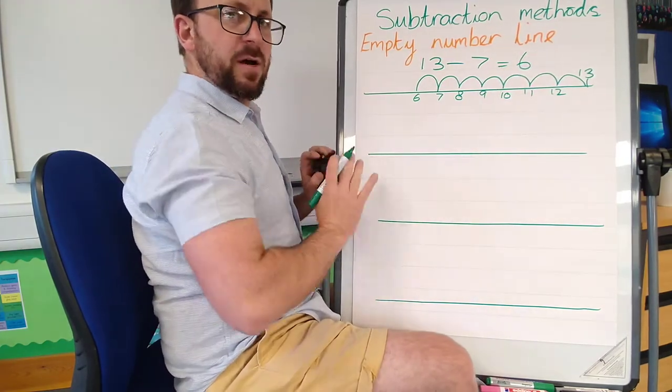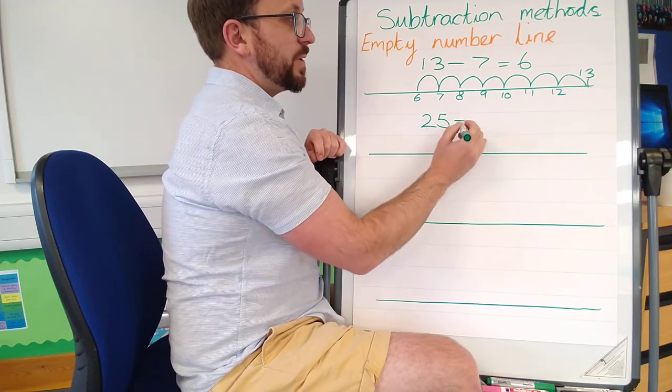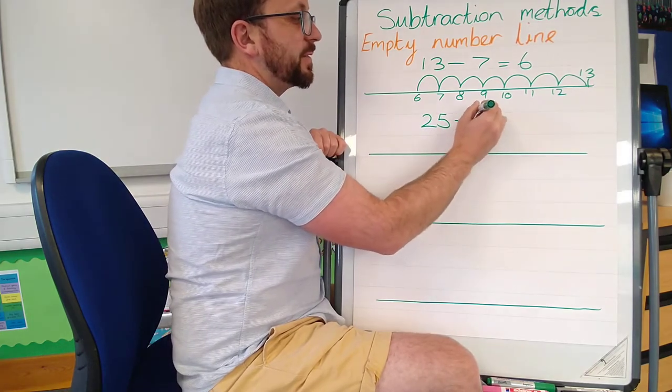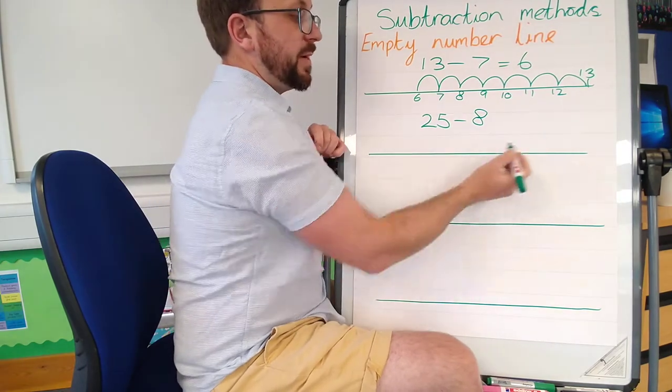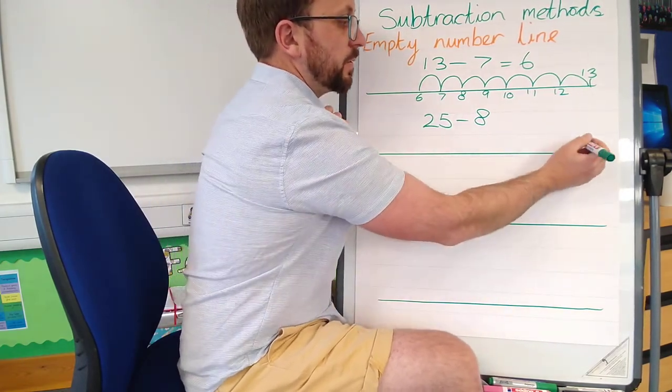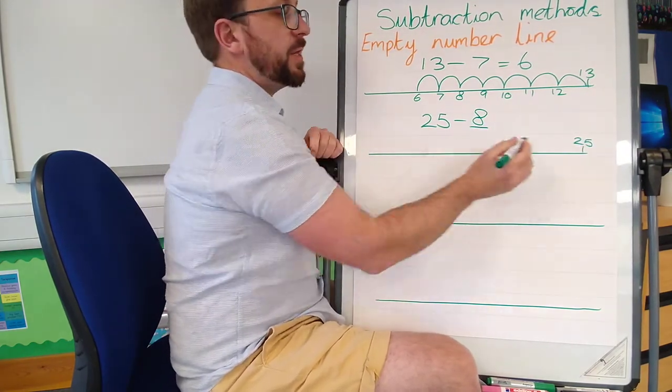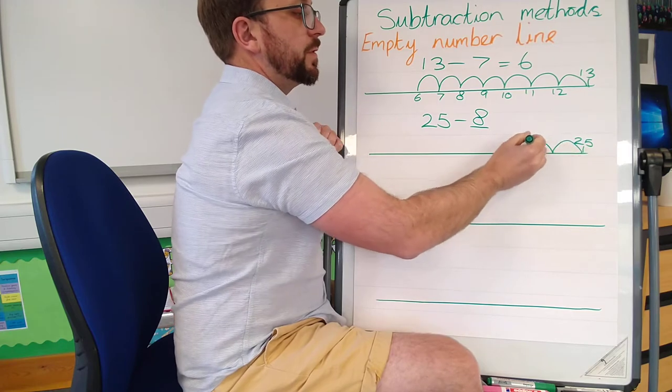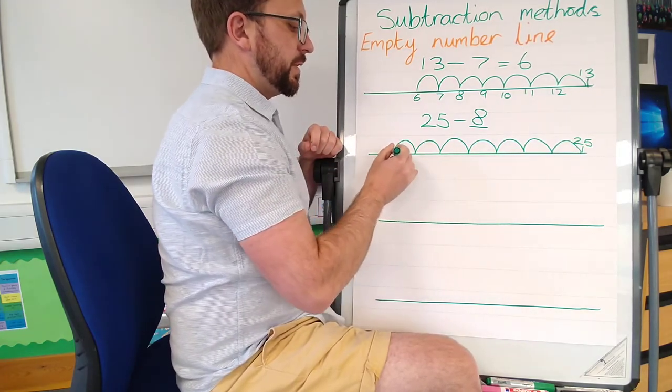Hope you're getting that. Let's try another one - let's try 25 take away 8. Where are we going to start? Biggest number at the end: 25. How many jumps backwards? Are you ready? 1, 2, 3, 4, 5, 6, 7, 8.